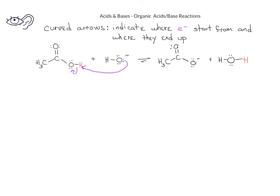This reaction shows the acid-base reaction between a carboxylic acid and a hydroxide ion. Using the curved arrows, we see that the bonding pair of electrons between the hydrogen and the oxygen of the carboxylic acid is donated to that oxygen, or remains with the oxygen of the carboxylic acid. One of the lone pairs of electrons from the hydroxide oxygen are donated to form a bond with the hydrogen from the carboxylic acid. On the product side, we see that this pair of electrons on the oxygen used to be bonded to the hydrogen. The hydrogen, which we indicate in red here, is now bonded to what was the hydroxide oxygen.